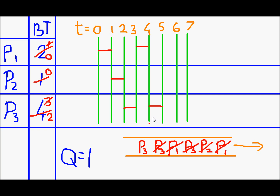The next in line is P3 again. The burst time remaining is 1 and it will join the queue at the back.